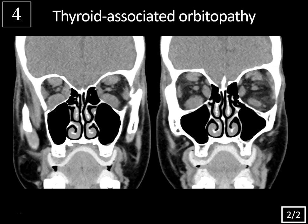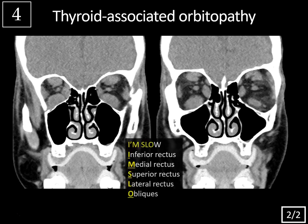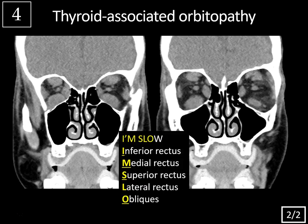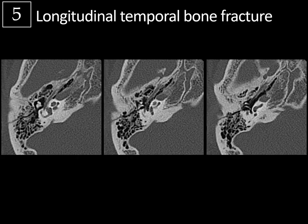Case 4 — thyroid-associated orbitopathy, typically associated with Graves' disease, causes proptosis. Remember the mnemonic 'I'M SLOW' for the progression of extraocular muscle involvement, starting with the inferior rectus. Case 5 — longitudinal temporal bone fractures are the most common. Look for ossicular disruption as a cause of conductive hearing loss, and also involvement of the facial nerve, carotid canal, or otic capsule.